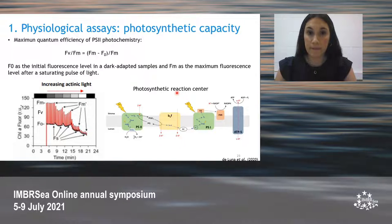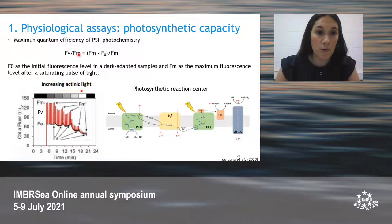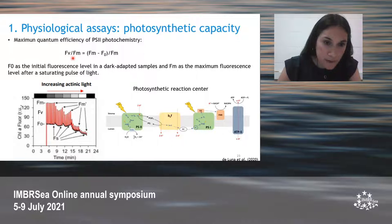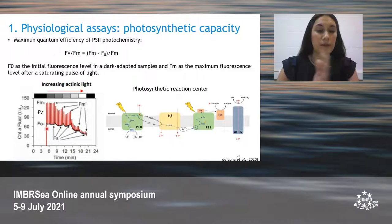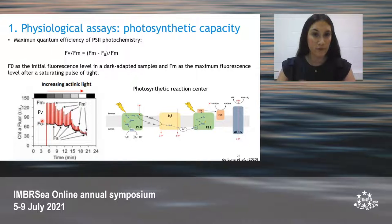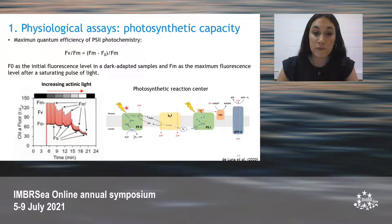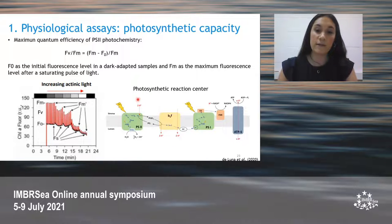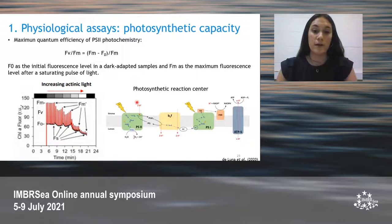In terms of the photosynthetic capacity, we first took into account the Fv/Fm, which corresponds to the maximum quantum efficiency of photosystem II photochemistry. Here there is a sample being submitted to increasing light intensities after a period of dark adaptation, and the Fv/Fm ratio takes into account the maximum and the minimum fluorescence recorded in that period of darkness. It can serve as an indicator of the primary photosynthetic performance of photosystem II in dark-adapted samples. Photosystem II is a light-harvesting complex present in the photosynthetic reaction center, and it is responsible for the primary reactions of photosynthesis.